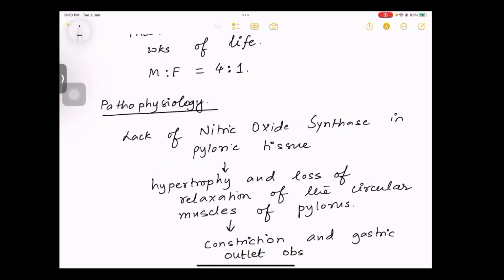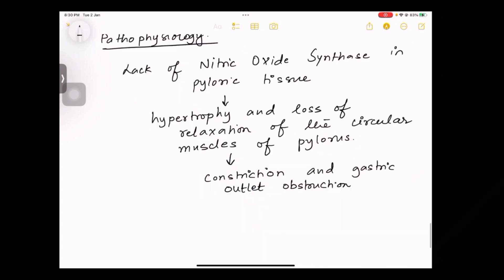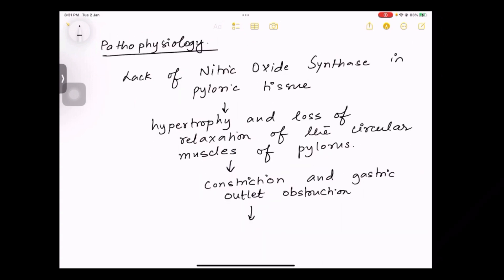Now there is a video on carcinoma of stomach where I have discussed that there is metabolic derailment in case of non-bilious vomiting, in which there is decreased sodium, decreased potassium, decreased chloride - hyponatremia, hypokalemia, hypochloremia. Metabolic alkalosis is there with paradoxical aciduria. So you get to see all these symptoms here as well because of gastric outlet obstruction.